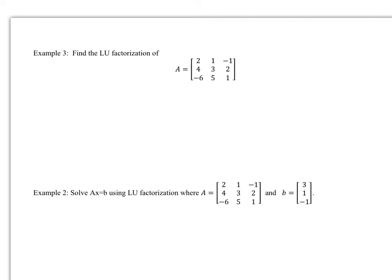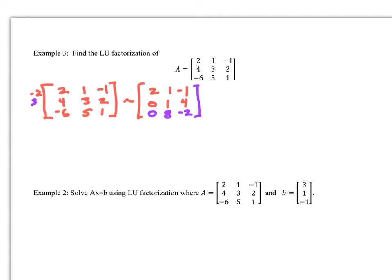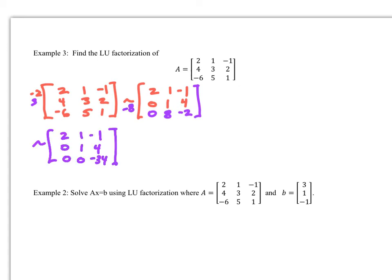Find the LU factorization of a 3x3 matrix A. Row reduce to get U: multiply by -2 to wipe out the (2,1) entry, getting row 2 as [0, 1, 4]. Multiply by 3 to eliminate the -6, getting row 3 as [0, 8, -2]. Record both multipliers.